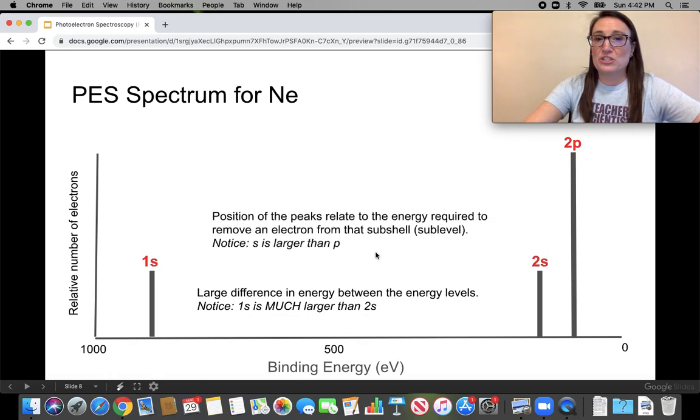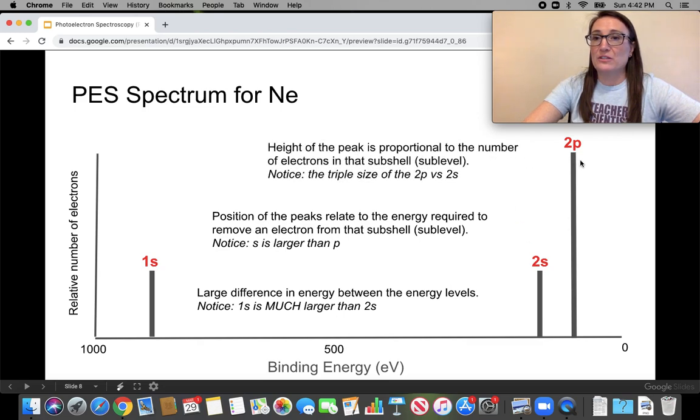Next, look at the fact that the positions of the peaks are relative to their sub-levels and where they're located, especially the p, less tightly bound than the s. Last but not least, look at the fact that the height of the peak is proportional to the number of electrons, and we kind of knew that this was neon.